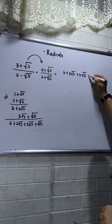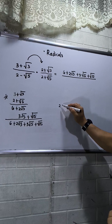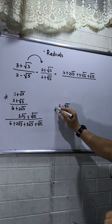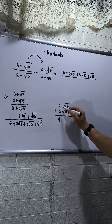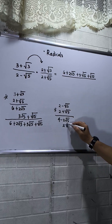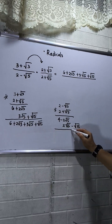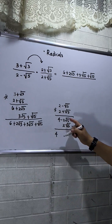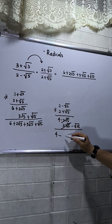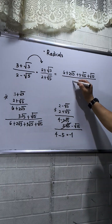Now over the denominator: multiply two minus square root of five by two plus square root of five. Note this is multiplication. Two times two is four, then negative two square root of five plus two square root of five — these cancel out to zero. Square root of 25 is five, so we have four minus five, which equals negative one.